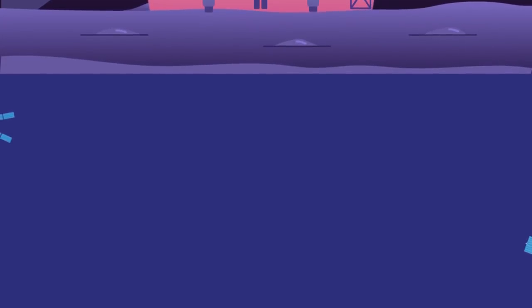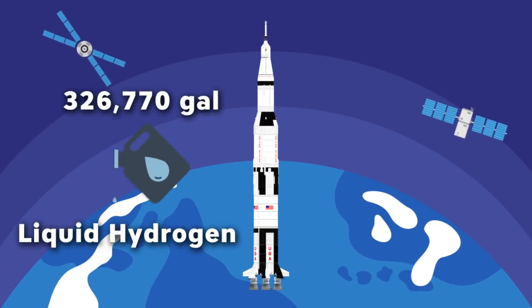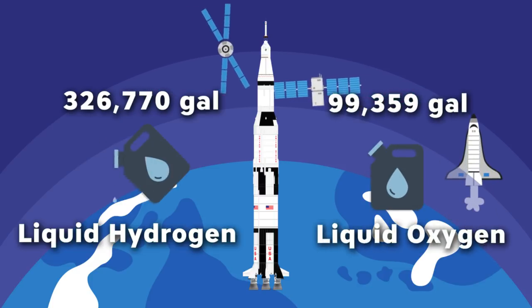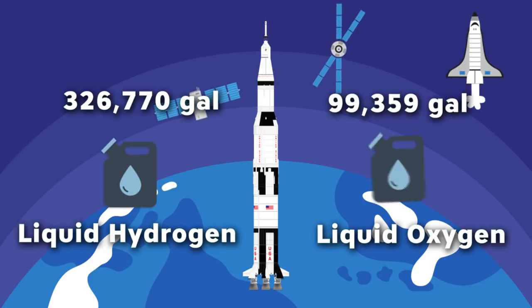For example, Saturn V rocket took 326,770 gallons of liquid hydrogen and 99,359 gallons of liquid oxygen to get the rocket out of the atmosphere. So this method of propulsion takes a lot of fuel.